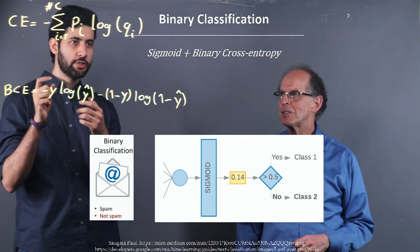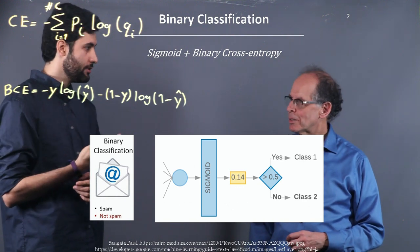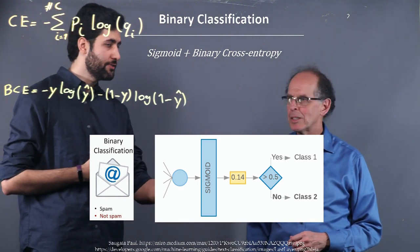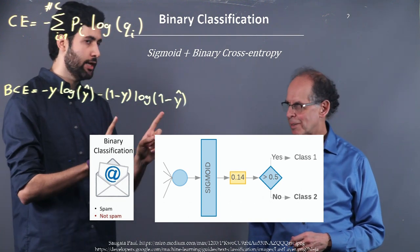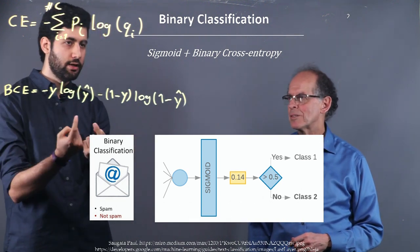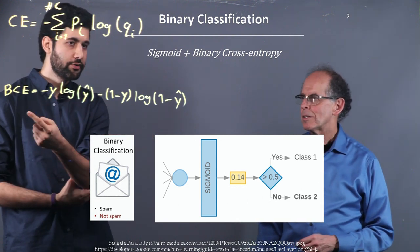Last time, we talked about binary classification using the sigmoid activation function and the binary cross-entropy. Mohamed, could you remind us about what we did with these two formulas? So we used the cross-entropy as our loss function. And if you have only two classes, some sort of binary classification like is it spam or not, is it a dog or not, just two classes, we used this formula, which would be the binary cross-entropy.